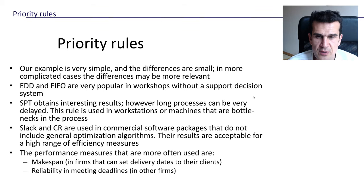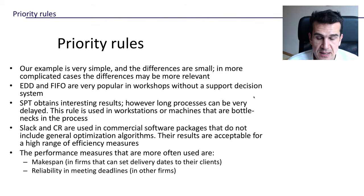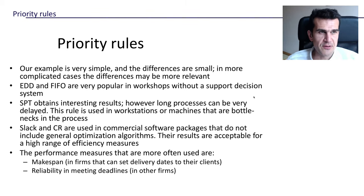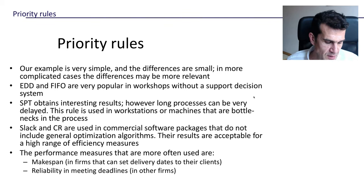In commercial software packages, total slack and critical ratio are priority rules that are often used because they usually give good results across a wide range of efficiency measures. However, they're not that easy to apply, which is why they're used only in workshops that use commercial software packages.